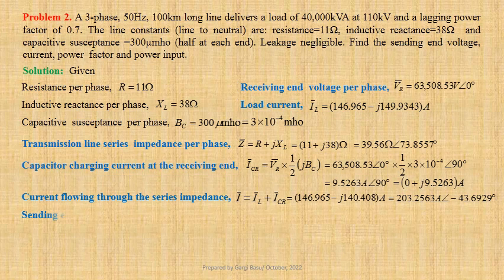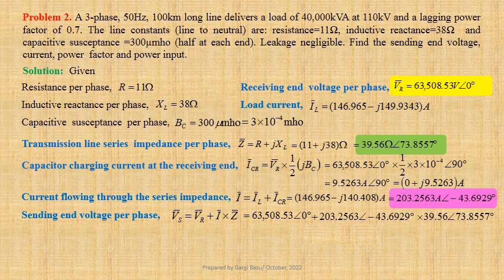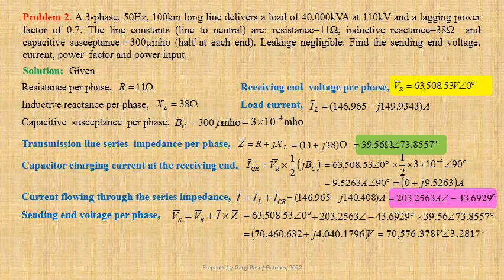Now we shall determine sending end voltage per phase. Vs equals Vr plus I times Z. Using values: 63,508.53 at angle 0° plus 203.2563 at angle −43.6929° times 39.56 at angle 73.8557°, that gives us 70,460.632 plus j times 4040.1796 volts. This may be written in polar form as 70,576.378 volts at an angle 3.2817 degrees.